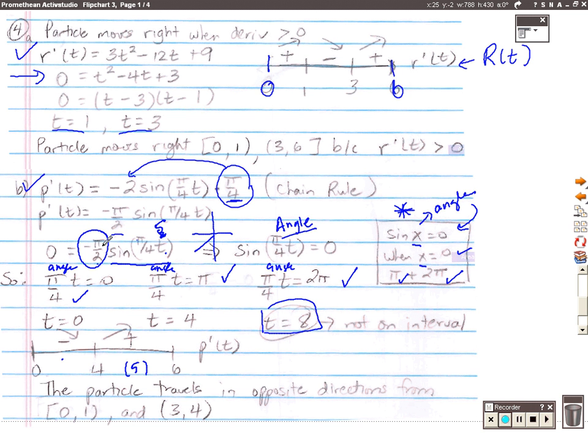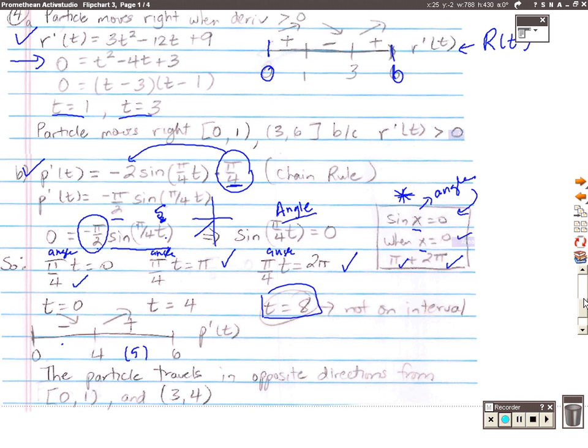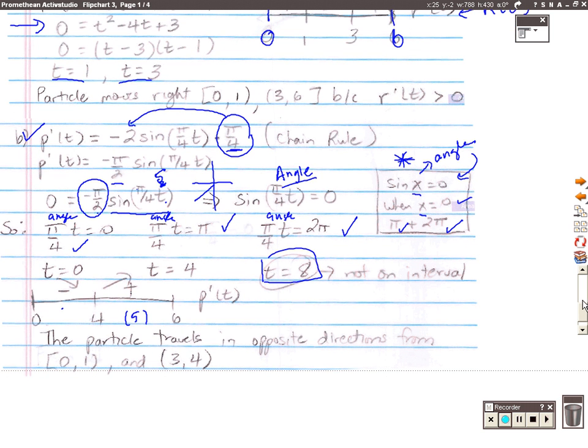So then I'm going to go back and compare my two number lines. What I wanted to know is when they were going in opposite directions. So I can see from 0 to 4, this number line is negative. And from 0 to 1, we have a positive. So opposite signs from 0 to 1. And then from 4 to 6, this one's positive. And from 3 to 6, this one's positive. But from 1 to 3, this number line is negative. So if we put all that together, from 0 to 1 the particles travel in opposite directions, and from 3 to 4 the particles travel in opposite directions. You've got to think a little bit about that. It's not really that hard. You just have to think a little bit and work with the trig. Make sure that you go back and review that trig if you need to.